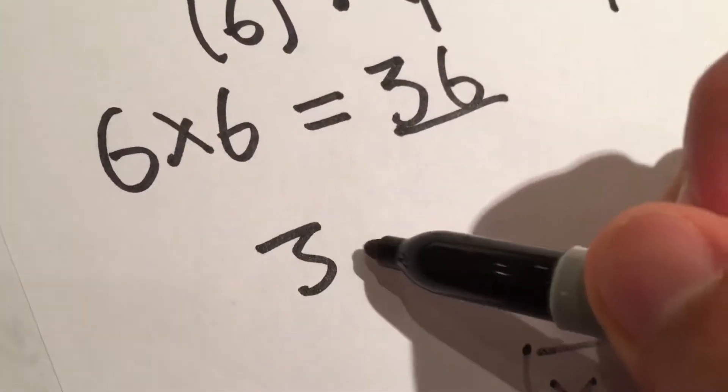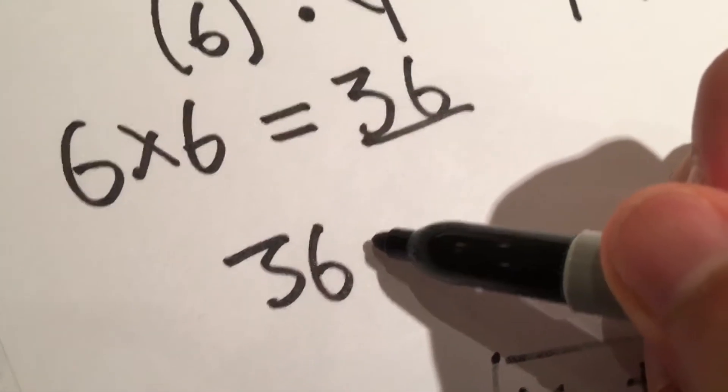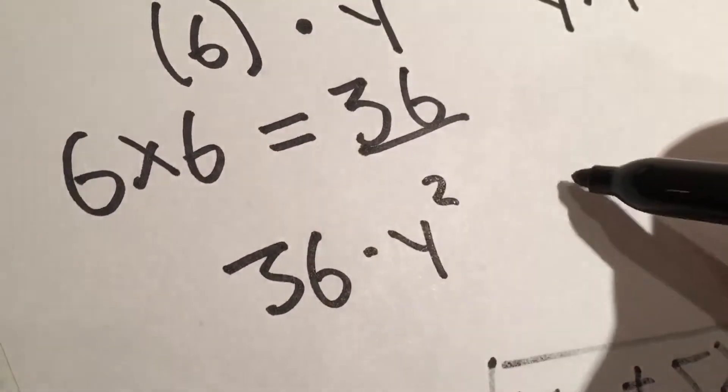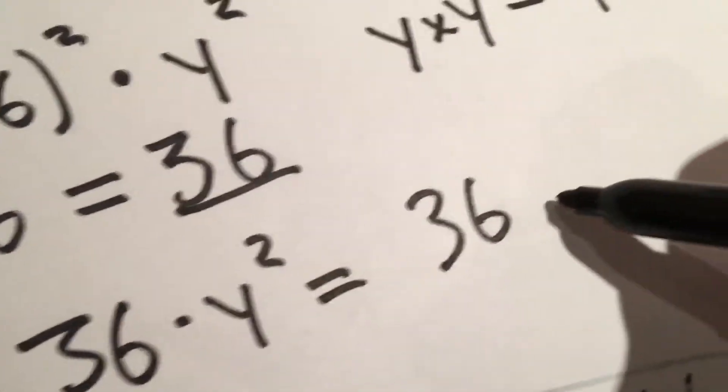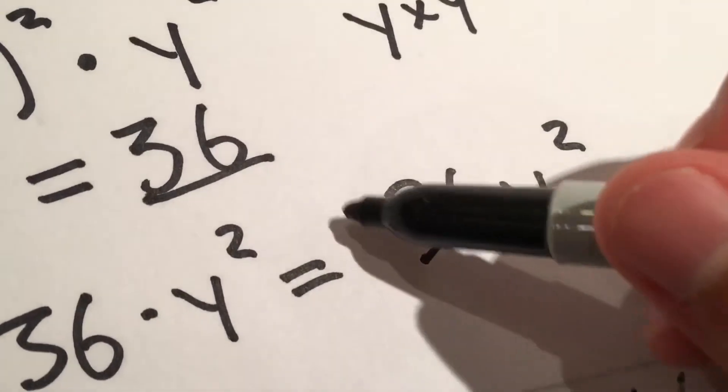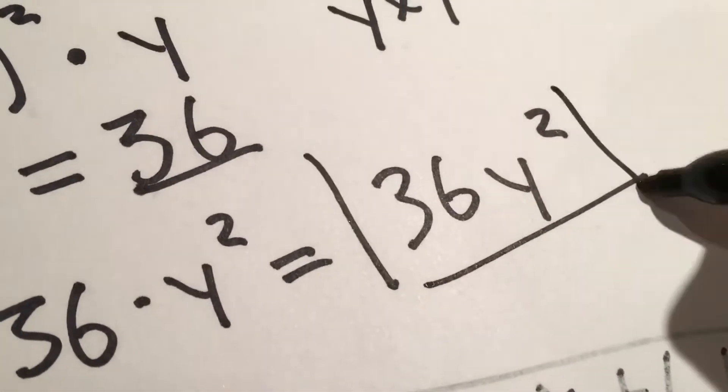So we're just going to write it as 3— 36, excuse me— times y², which is also written as 36y². That is our final answer.